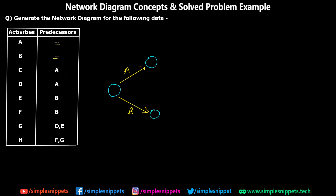Moving to activity C — A is its mandatory predecessor. Since A has happened and we've reached its end node, we can start C from there. Similarly for D, A is also the predecessor. So D also starts from the same node as C. Both C and D start from the node reached after completing A.